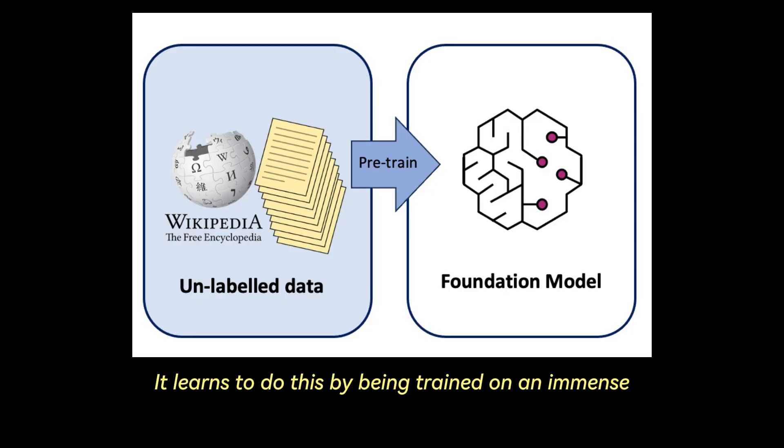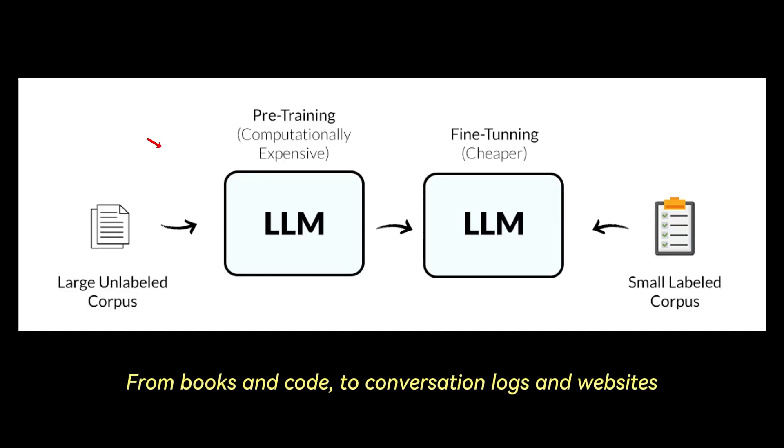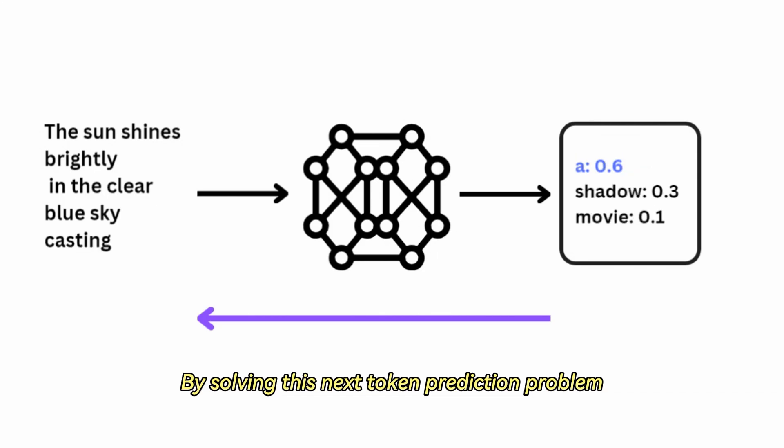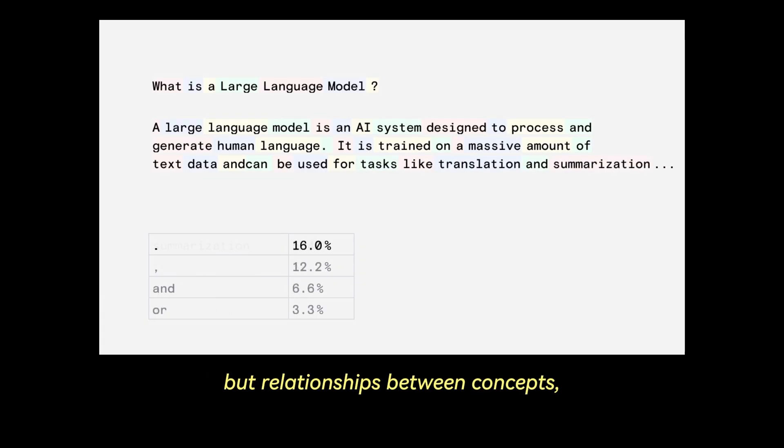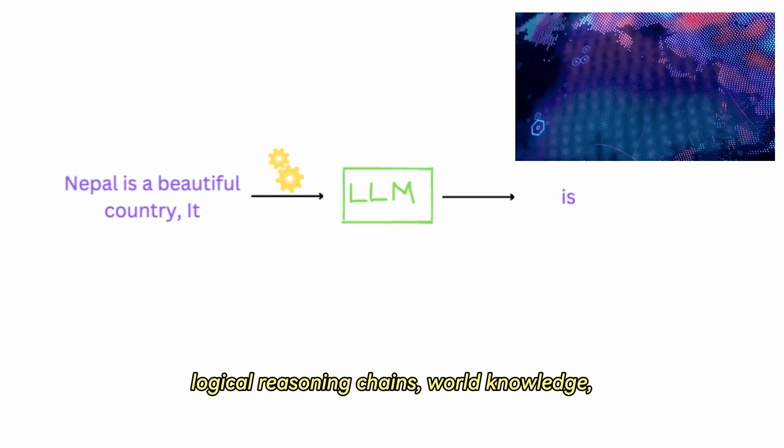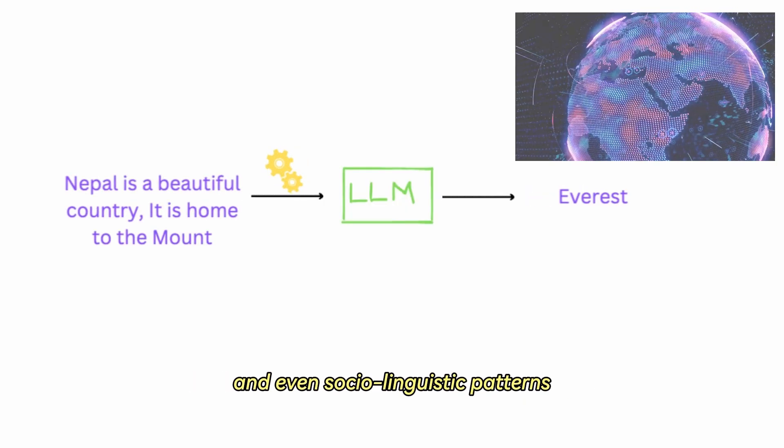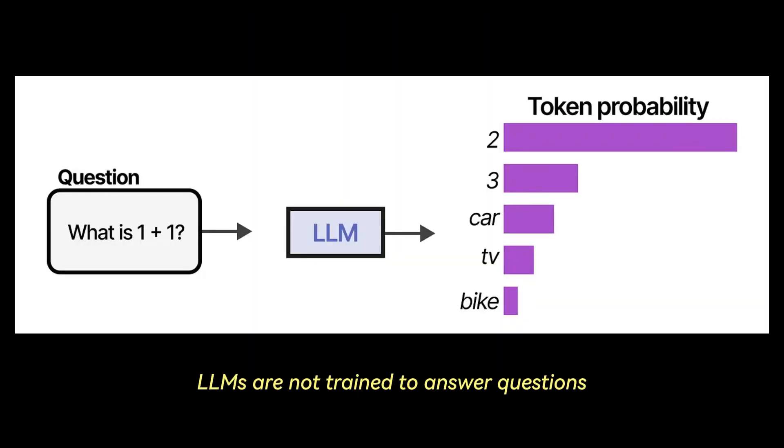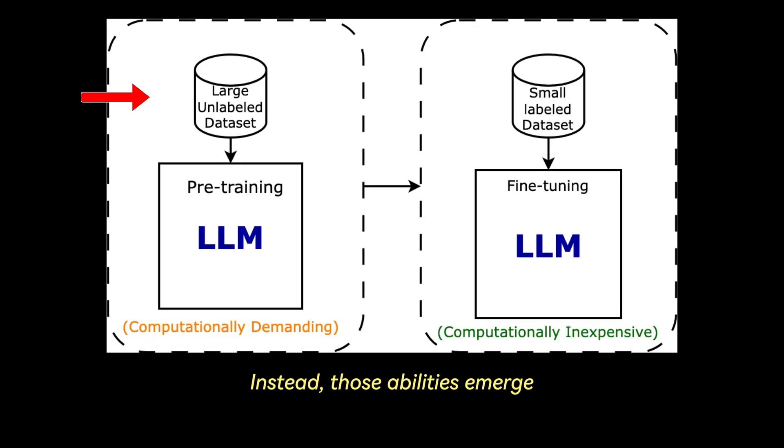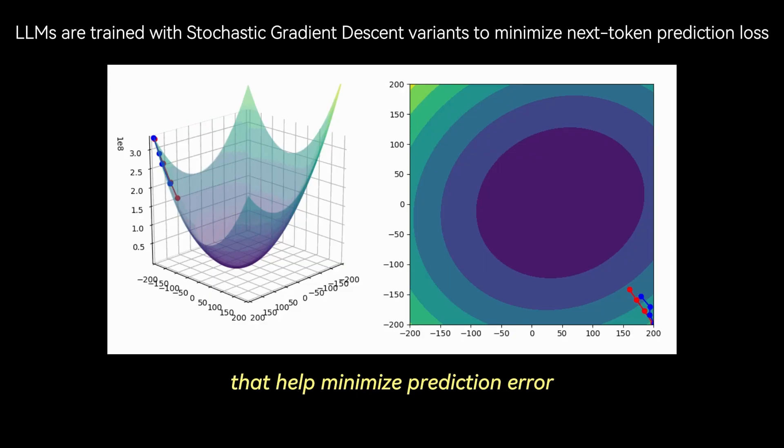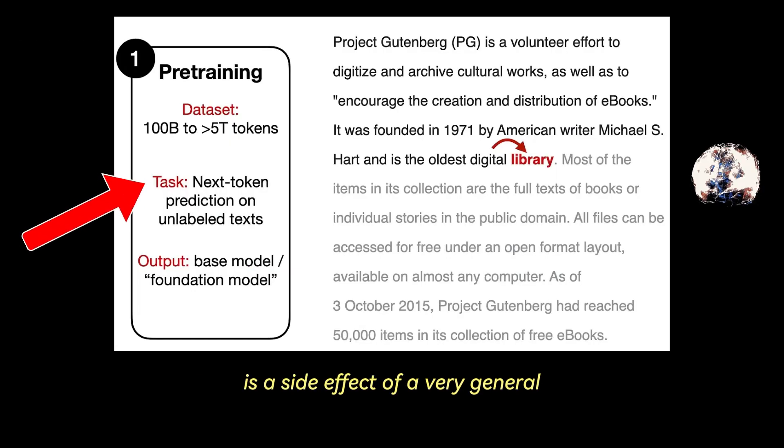It learns to do this by being trained on an immense corpus of human-generated text, from books and code to conversation logs and websites. By solving this next token prediction problem over billions of examples, the model begins to internalize not just grammar and syntax, but relationships between concepts, logical reasoning chains, world knowledge, and even sociolinguistic patterns like tone and persuasion. Importantly, LLMs are not trained to answer questions or follow instructions directly. Instead, those abilities emerge because they are useful patterns in human language that help minimize prediction error. In other words, the ability to perform seemingly intelligent tasks is a side effect of a very general statistical training objective.